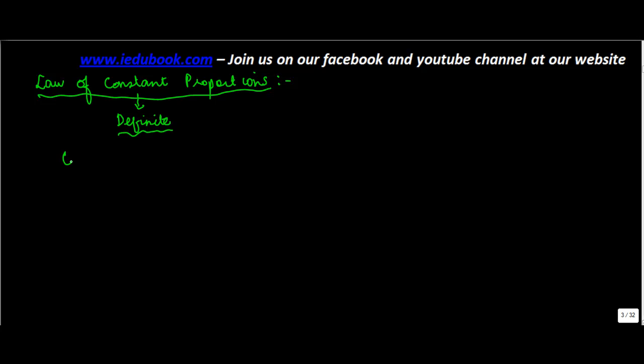Now we know that a compound is what? Compound is basically formed of various elements. Element 1, element 2, element 3.